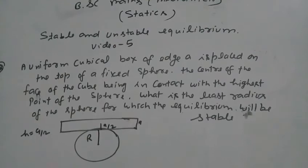What is the least radius of the sphere for which the equilibrium will be stable? The equilibrium: the radius of the sphere and upper body is a plane.